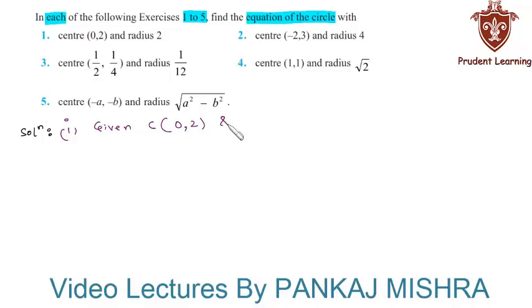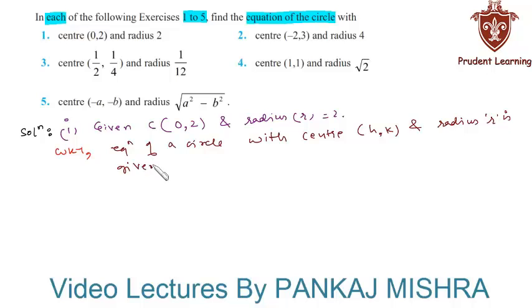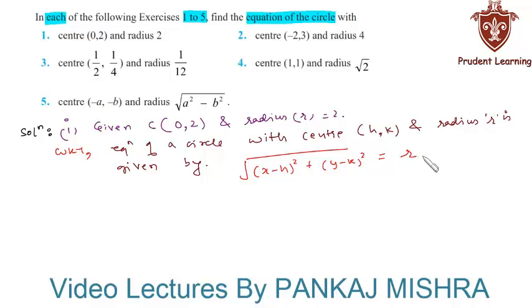In question 1, we are given coordinates of center are 0 comma 2 and radius of the circle is 2. We know that the equation of a circle with center h comma k and radius r is given by: the square root of (x minus h) whole square plus (y minus k) whole square is equal to r, where x and y are coordinates of any point P on the circle.